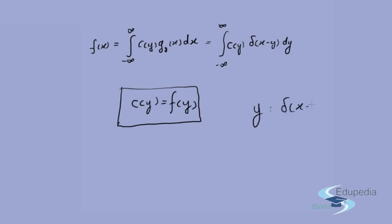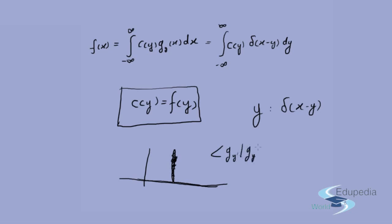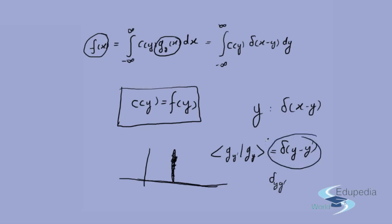To summarize the position operator results: the eigenvalues are the values y; the eigenfunctions are δ(x − y), which is 0 everywhere except at x = y. Physically, when you measure position, the only non-zero probability is at point y — the particle is found nowhere else. The eigenfunctions obey Dirac orthonormality, ⟨g_{y'} | g_y⟩ = δ(y − y'), and are complete. Because of the continuous index, the Kronecker delta is replaced by the Dirac delta function.